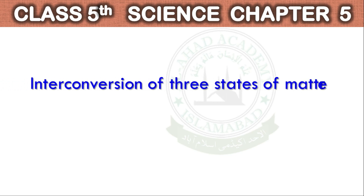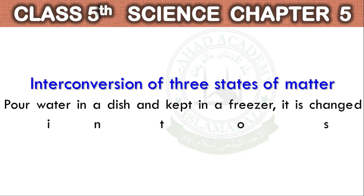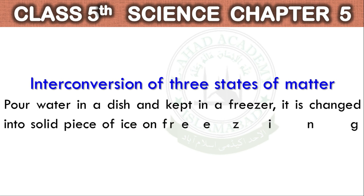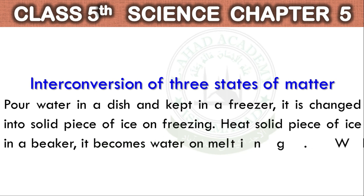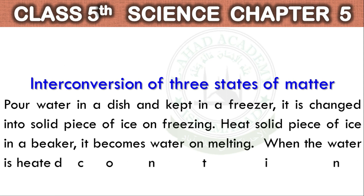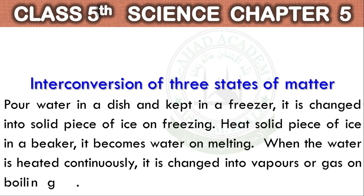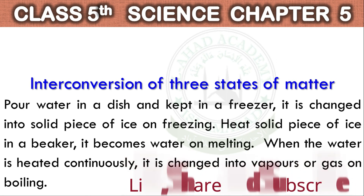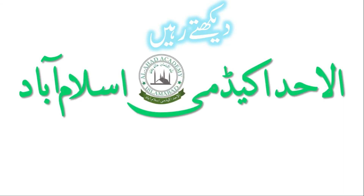Interconversion of three states of matter: Pour water in a dish and keep it in a freezer. It is changed into a solid piece of ice on freezing. Heat the solid piece of ice in a beaker — it becomes water on melting. When the water is heated continuously, it is changed into vapors or gas on boiling.